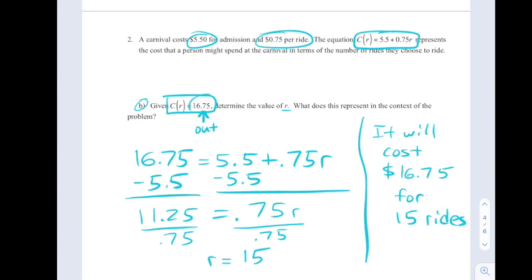Meaning that it will cost $16.75 for 15 rides. We were given the output of 16.75, which is dollars. And we solved for the number of rides that go with that, which is 15. So it will cost $16.75 for 15 rides.